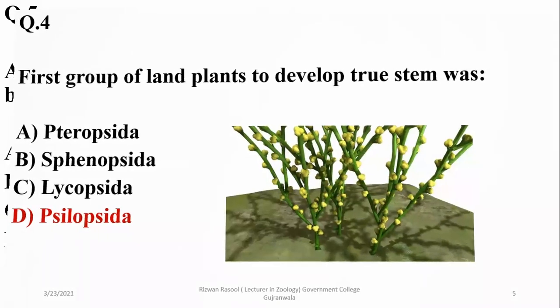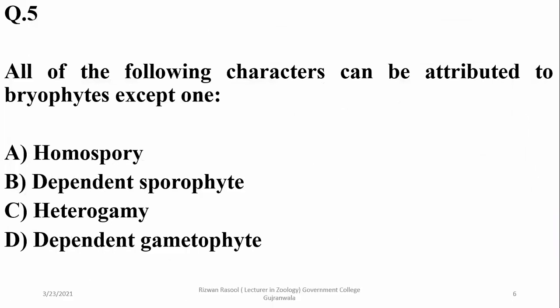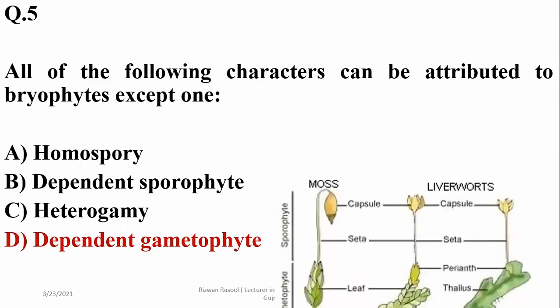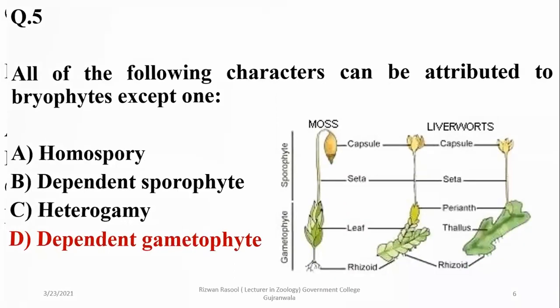All of the following characters can be attributed to bryophytes except one. Bryophytes are homosporous, they have a dependent sporophyte, and in most classes they are heterogametic, but the gametophyte is always independent. So the right option is delta.